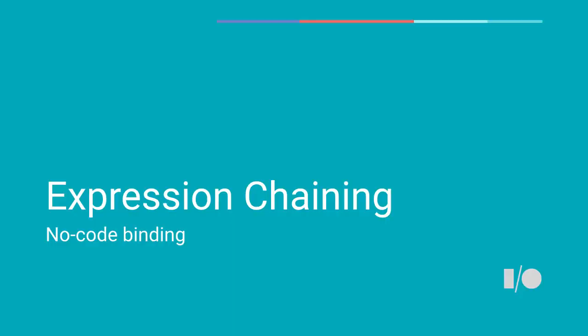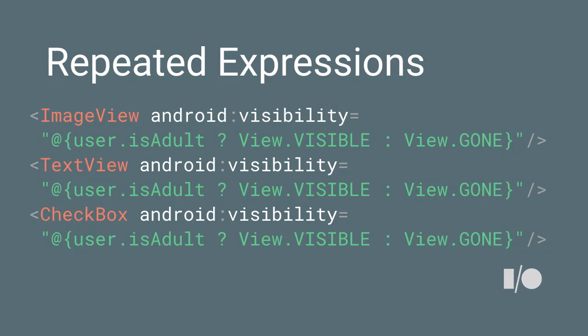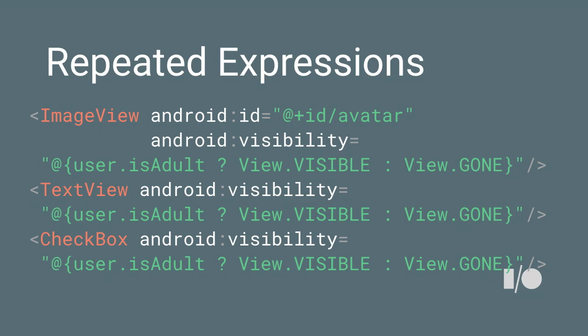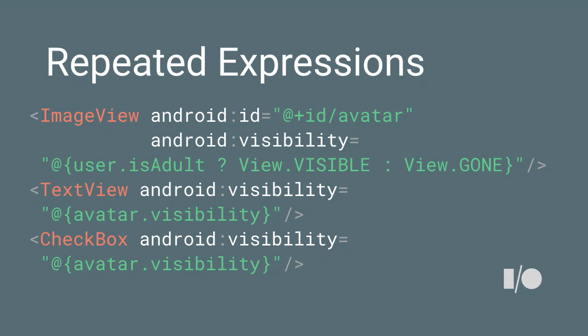Let's talk a little bit about expression chaining. Here I have a layout with three views and they all have the same expression in it — kind of ugly code. I'd like to have it once and reuse it elsewhere. So what I can do is create an ID that I can later use in my other expressions. Now we can just bind to another field — it's pretty nice. Under the hood, it just says: I recognize that expression, we already had a bound expression there, I'll just substitute that.